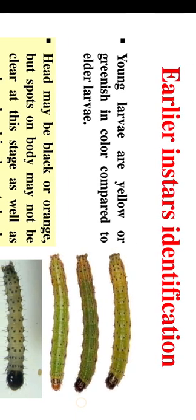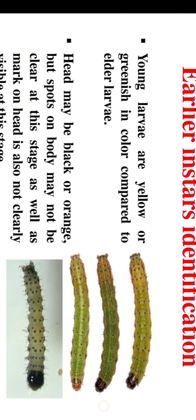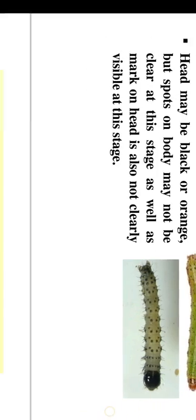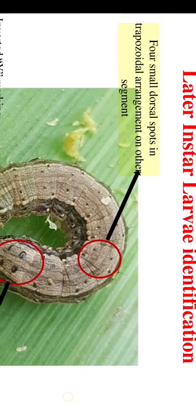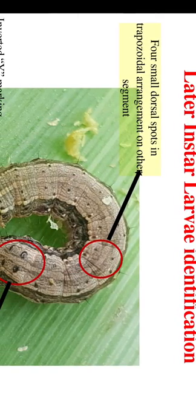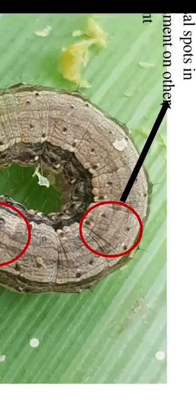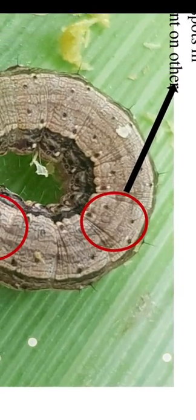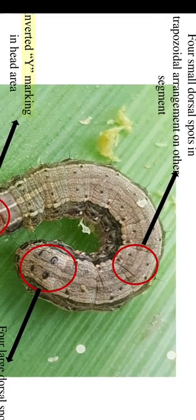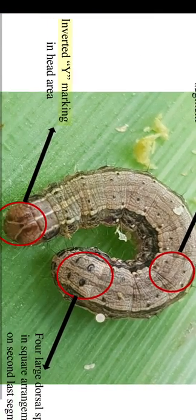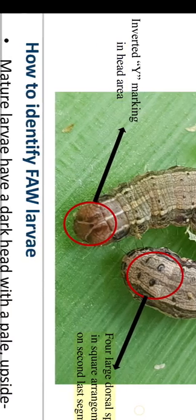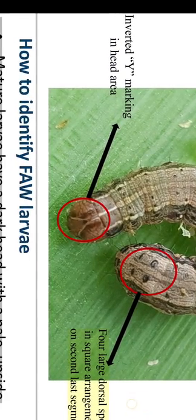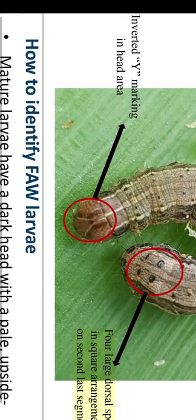Biology of fall armyworm — later instar larvae identification: four small dorsal spots in trapezoidal arrangement on other segments; inverted Y marking in head area; four large dorsal spots in square arrangement on second last segment.